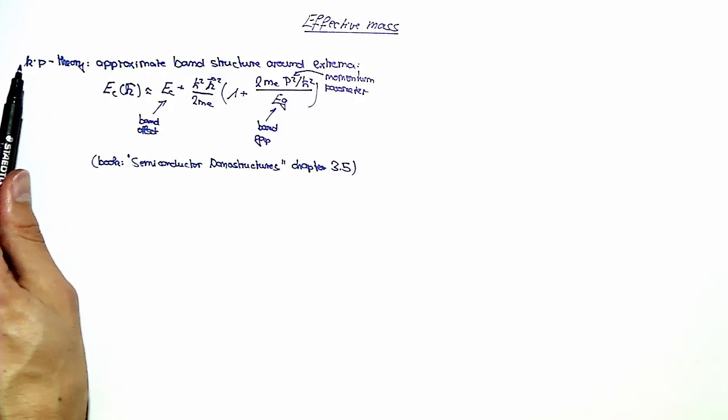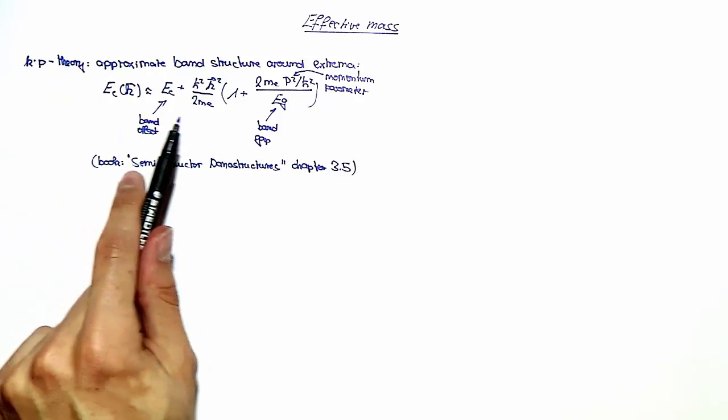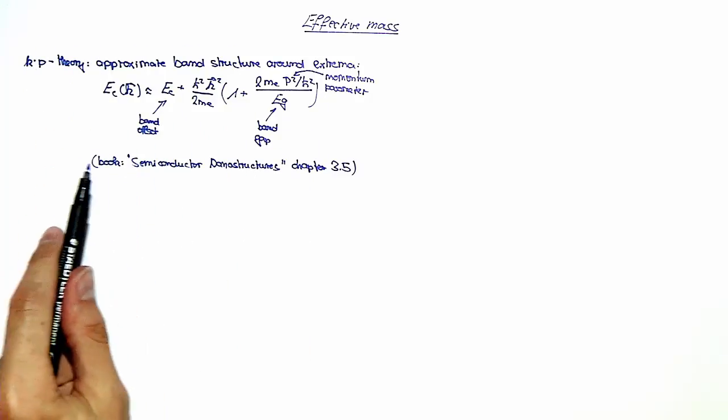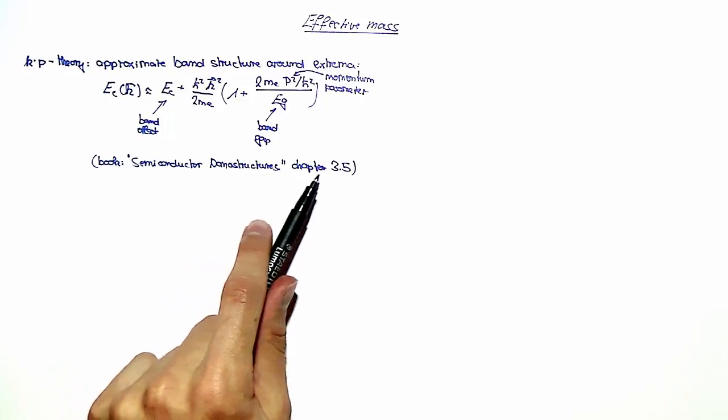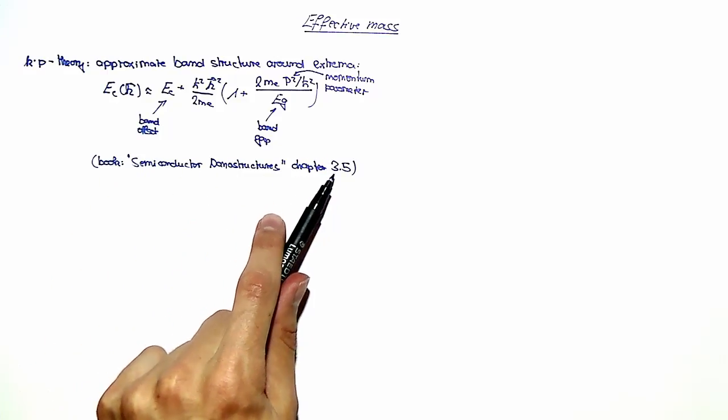More details about this k.p theory and derivation of this equation can be found in the book Semiconductor Nanostructures in chapter 3.5.